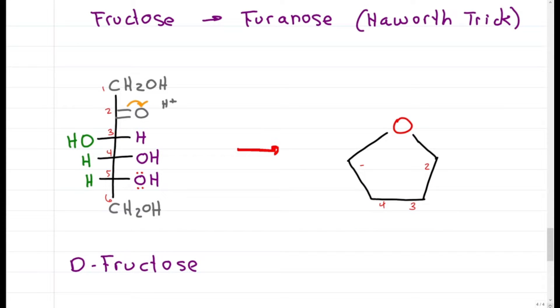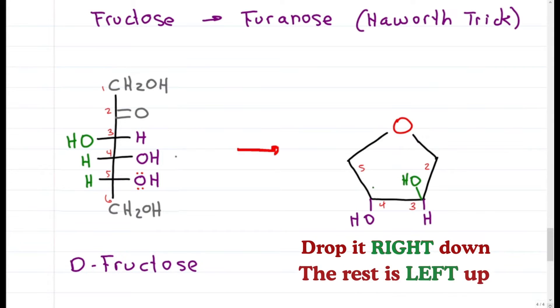Ready to fill it in? Since carbon 5 did the attack and carbon 2 got attacked, only 3 and 4 remain unchanged, and so we drop them right down, and the other side gets left up. Just like with the pyranose, the achiral position will be opposite the attacking OH.